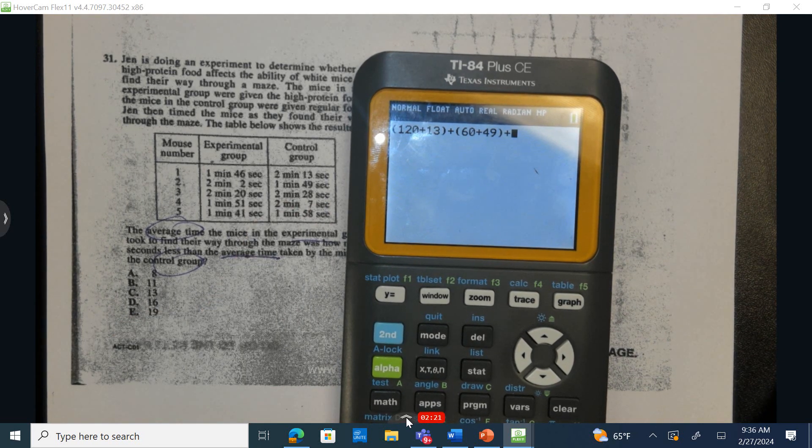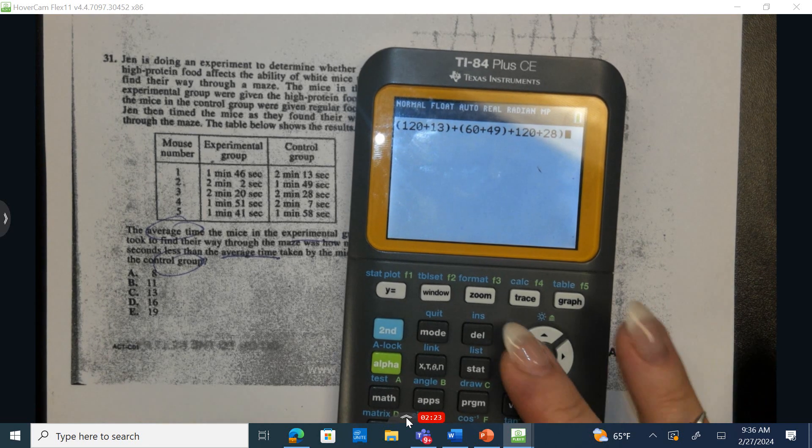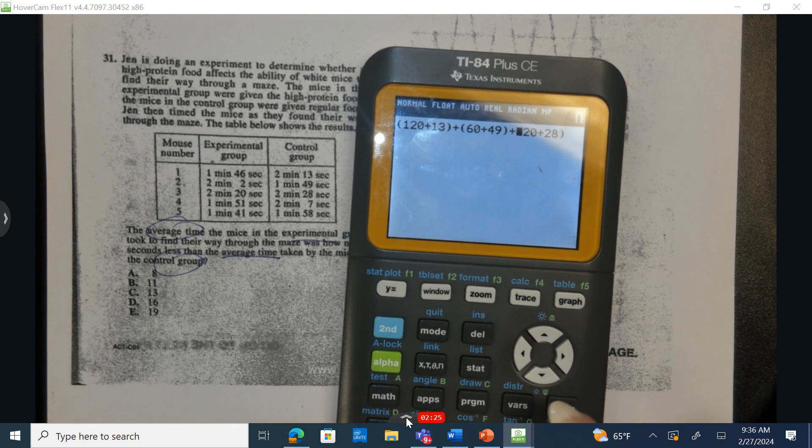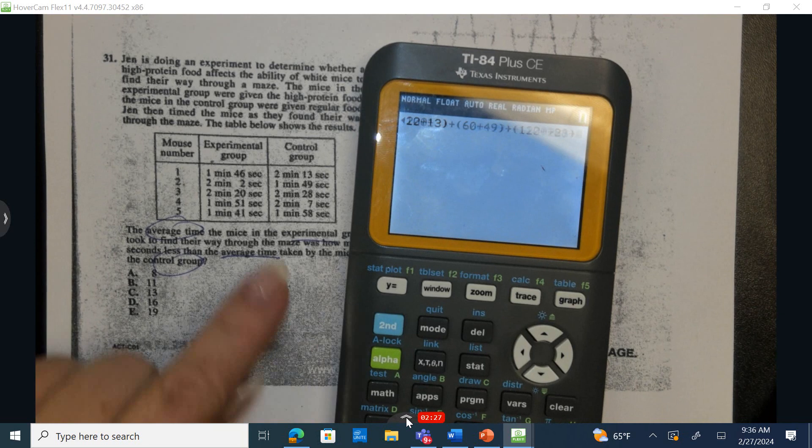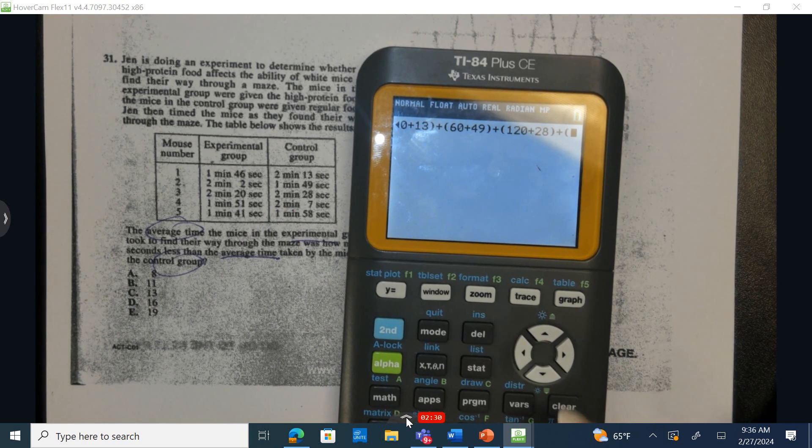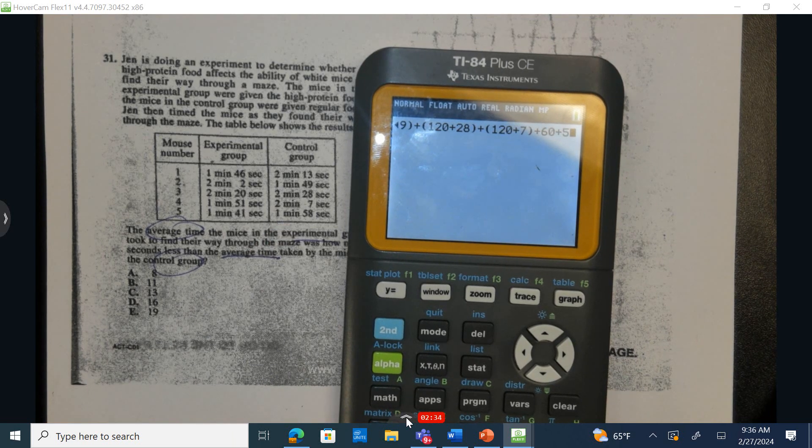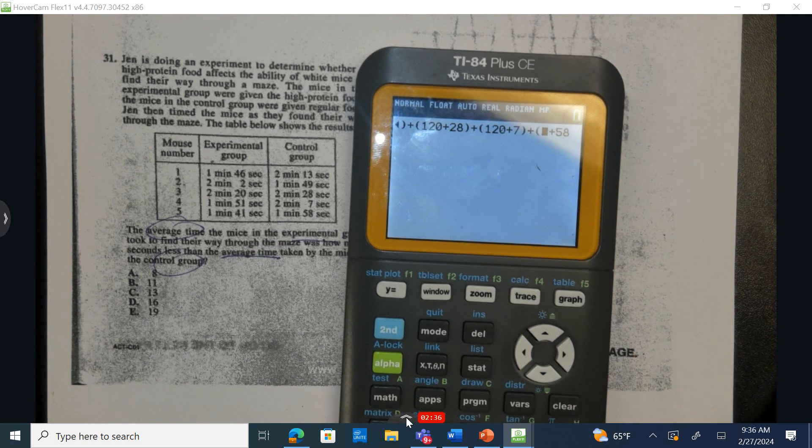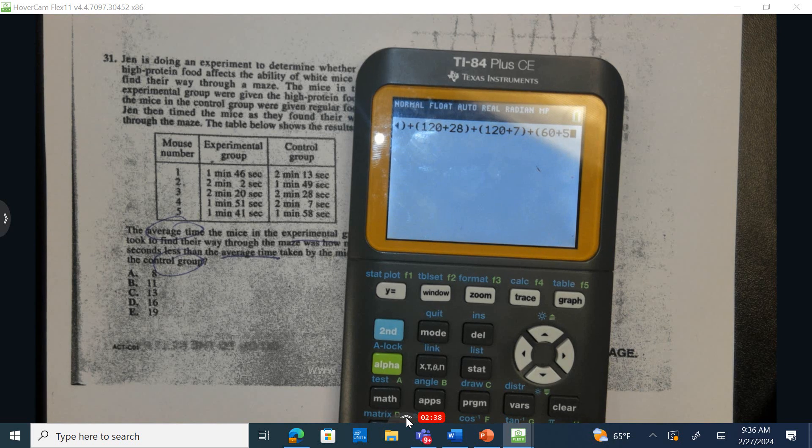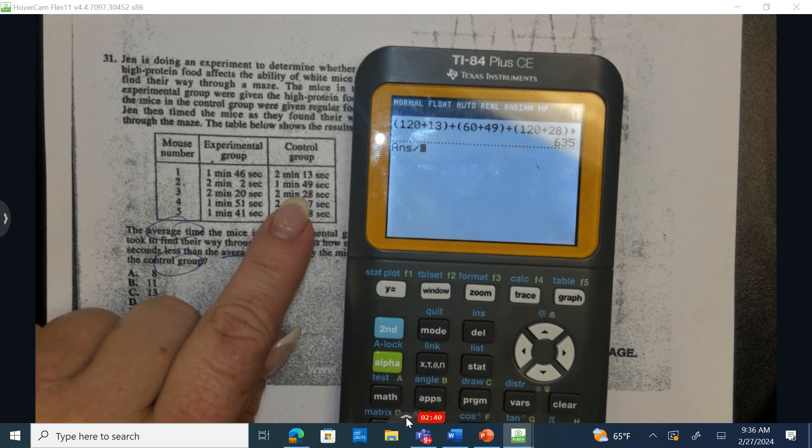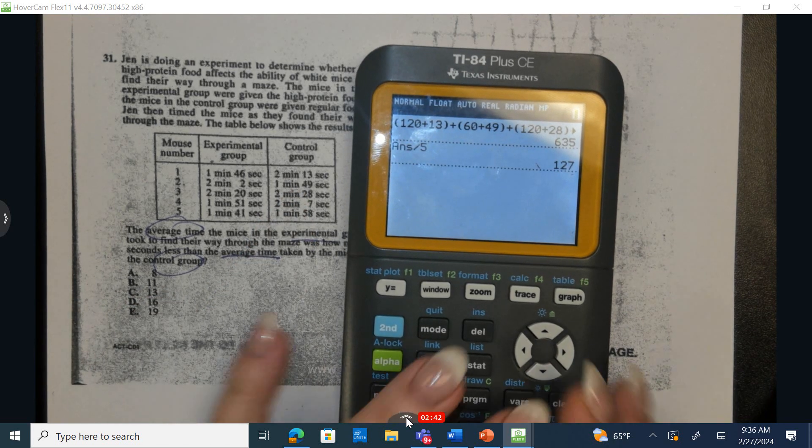Plus 120 plus 28. That's the frequency there. Plus 120 plus 7, plus 60 and 58. I get it divided by 5 data points, and I get 127.